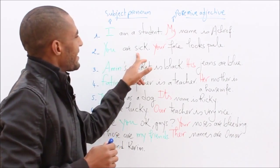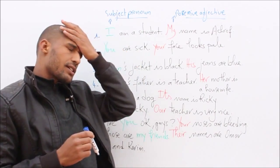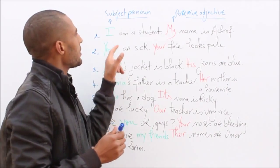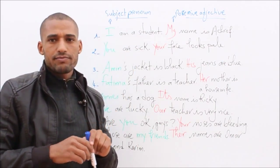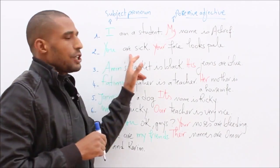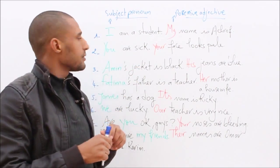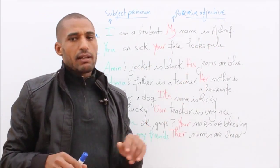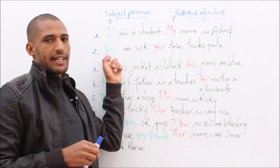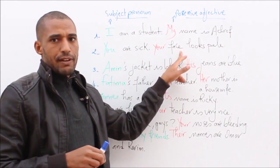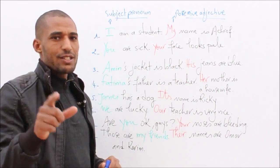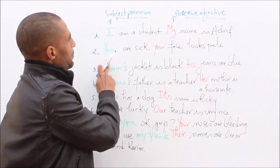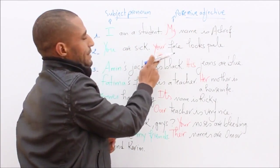Number two: You are sick. Your face looks pale. 'You' here is a subject pronoun. You are sick — it could be a female or male person. Your face looks pale. 'Your' here refers to 'you' — the face that belongs to you. So for 'you', the possessive adjective is 'your'.